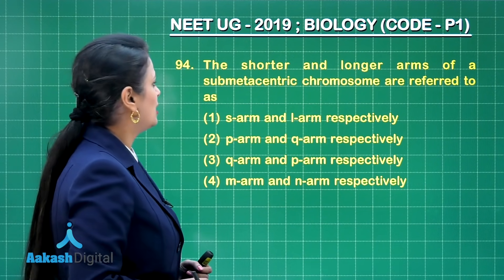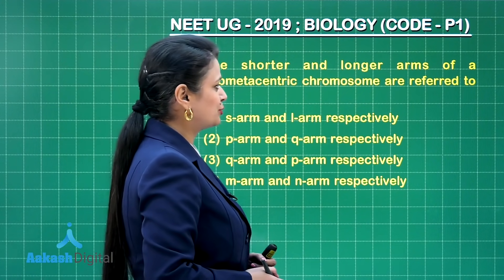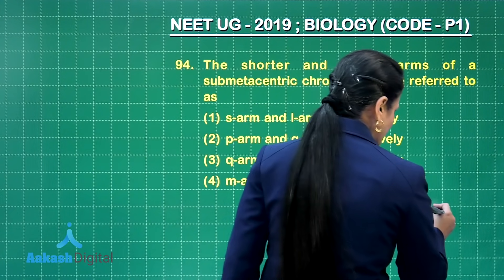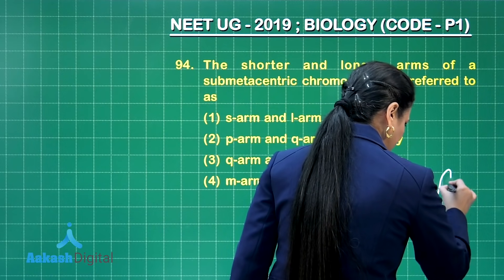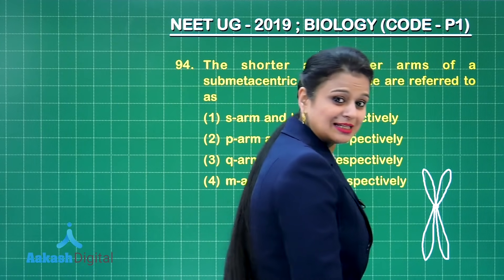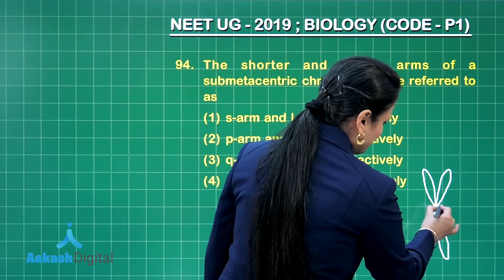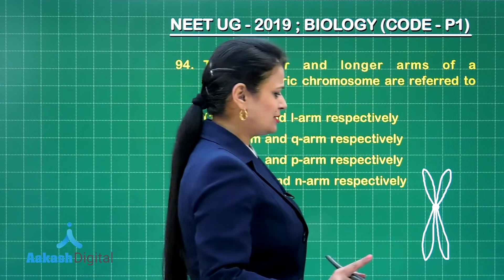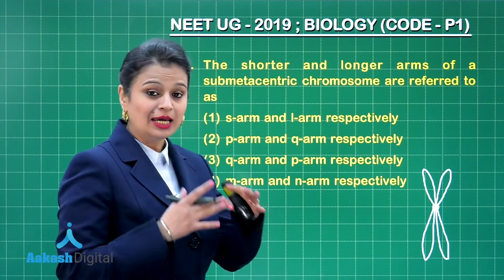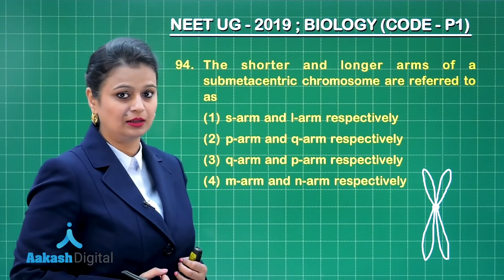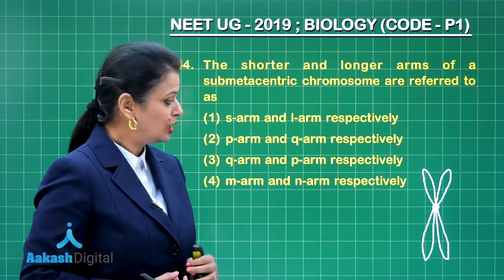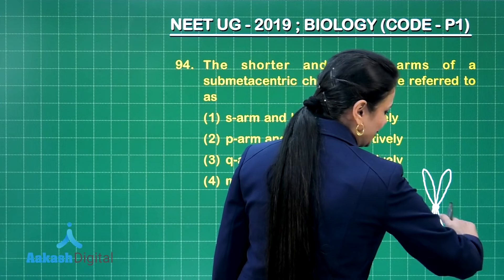The shorter and longer arms of a sub-metacentric chromosome are referred to as? In a sub-metacentric chromosome, the centromere is not located at the center — it is near to the center. Due to this, one arm is short and another one is long.